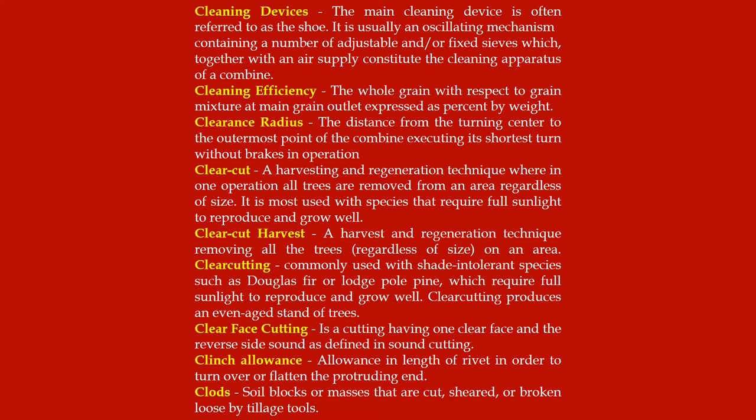Cleaning efficiency: the whole grain with respect to grain mixture at main grain outlet, expressed as percent by weight. Clearance radius: the distance from the turning center to the outermost point of the combine executing its shortest turn without breaks in operation. Clear cut: a harvesting and regeneration technique wherein in one operation all trees are removed from an area regardless of size; most used with species that require full sunlight to reproduce and grow well.